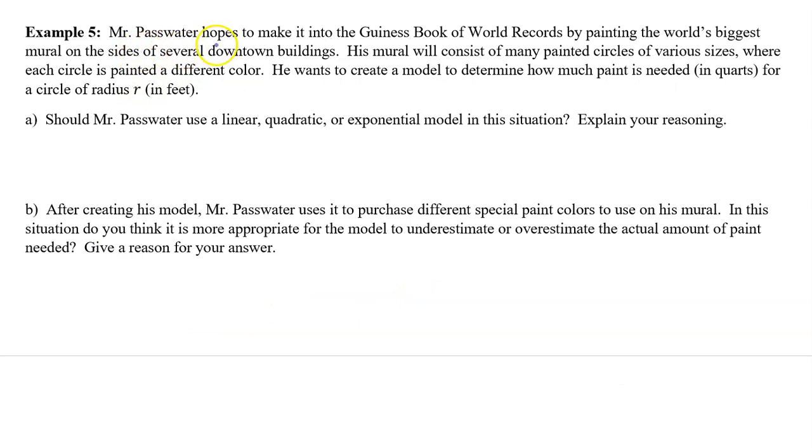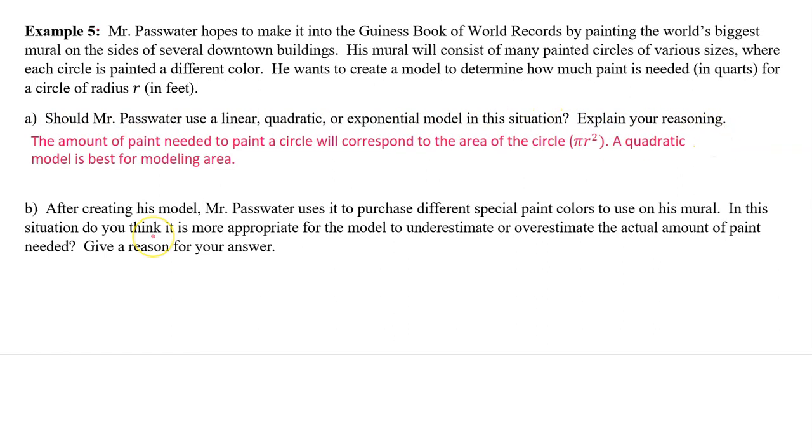Example 5. Mr. Passwater hopes to make it into the Guinness Book of World Records by painting the world's biggest mural on the sides of several buildings downtown. His mural will consist of many painted circles of various sizes, where each circle is painted a different color. He wants to create a model to determine how much paint is needed in quarts for a circle of radius r in feet. Part A. Should Mr. Passwater use a linear, quadratic, or exponential model in this situation? Explain your reasoning. The amount of paint needed to paint a circle will depend on the area of the circle, pi times the radius squared. A quadratic model is best for modeling area.